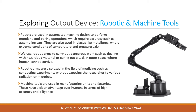They are also used in places like metallurgy where extreme conditions of temperature and pressure exist. We use robotic arms to carry out dangerous work such as dealing with hazardous material or carrying out tasks in outer space where humans cannot survive. Robotic arms are also used in the field of medicine, such as conducting experiments without exposing the researcher to various radiations or microbes. Machine tools are used in manufacturing units and factories. They have a clear advantage over humans in terms of high accuracy and diligence; they can work for long hours accurately without even a coffee break.